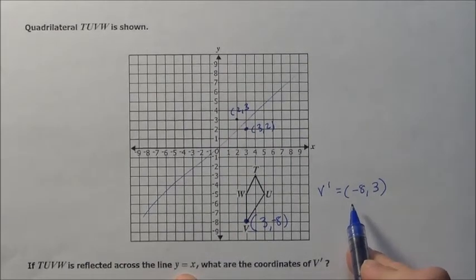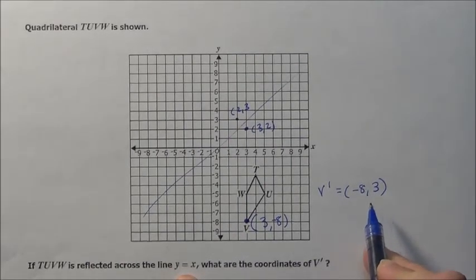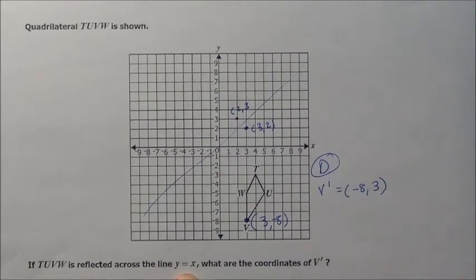But here I just wanted Y equals X. So V prime is negative 8 comma 3, which on our choices was choice D.